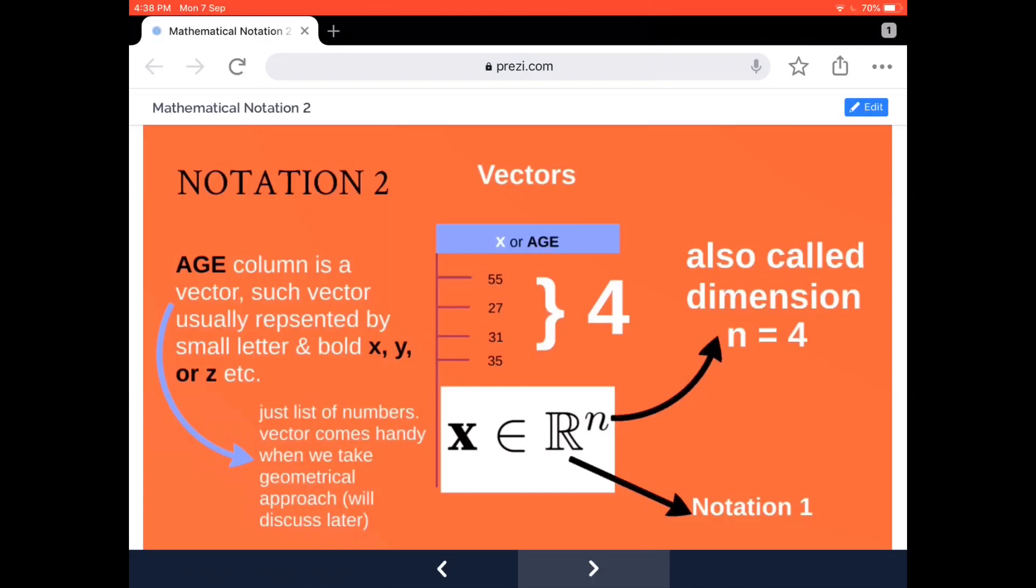for now let's consider a vector is just a list of numbers. Say age is data that we have and we're calling it using a small x or the word age, and it has four elements. If you realize, all four values are real numbers, so if I have to